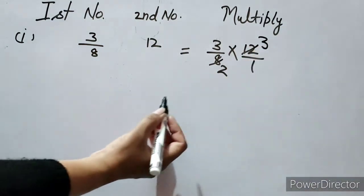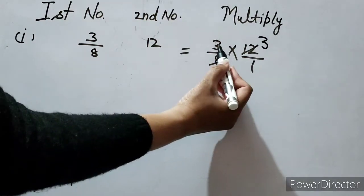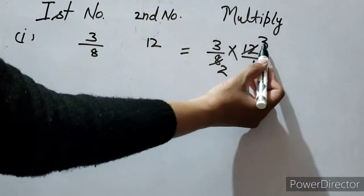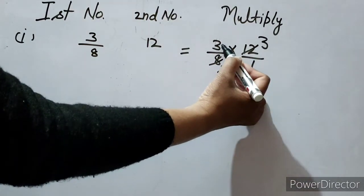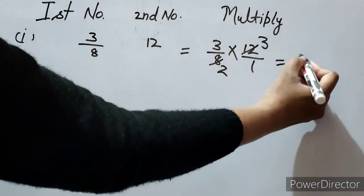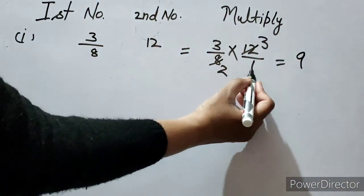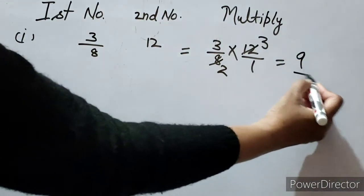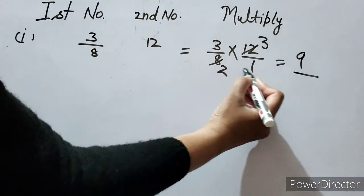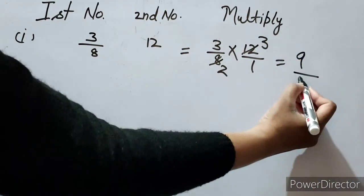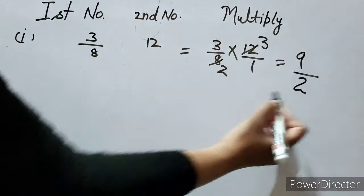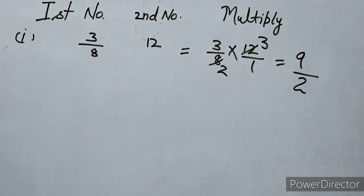Now numerator multiplied by numerator: 3 multiplied by 3 gives 9. Denominator multiplied by denominator: 2 multiplied by 1 gives 2. So the answer is 9 over 2.